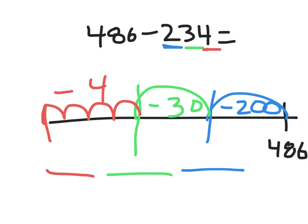I'm back at 486. I know that I'll be subtracting 200, so the four will change. So 486 minus 200 is 286.